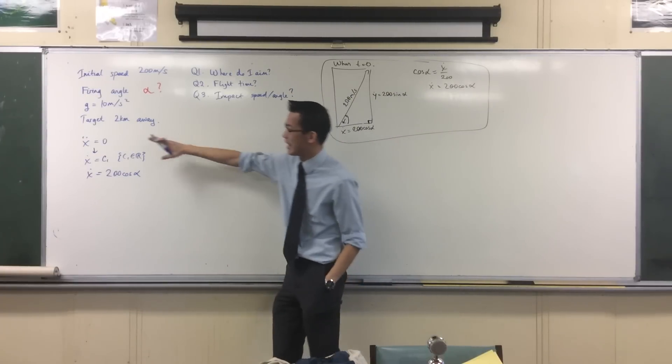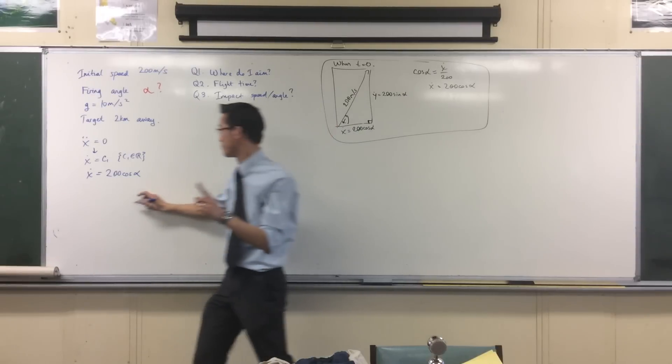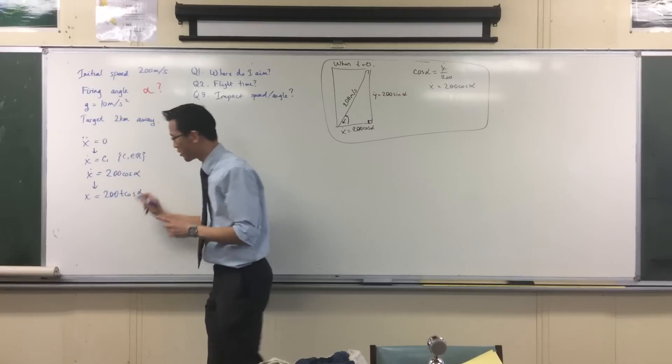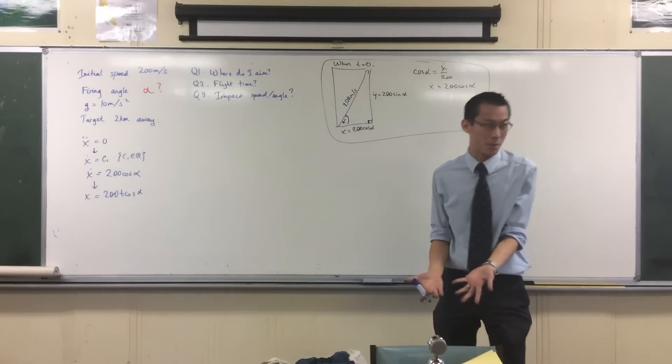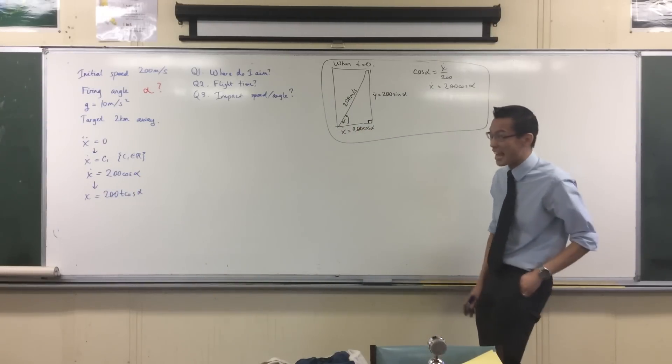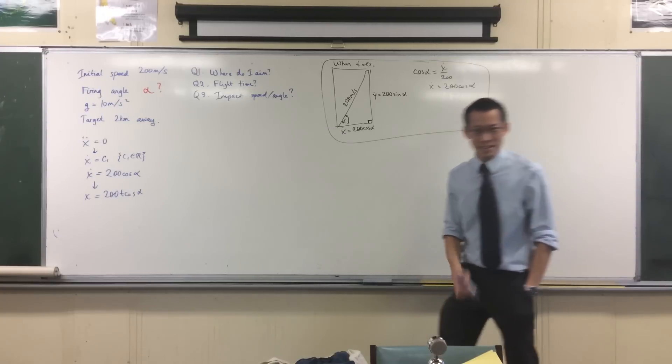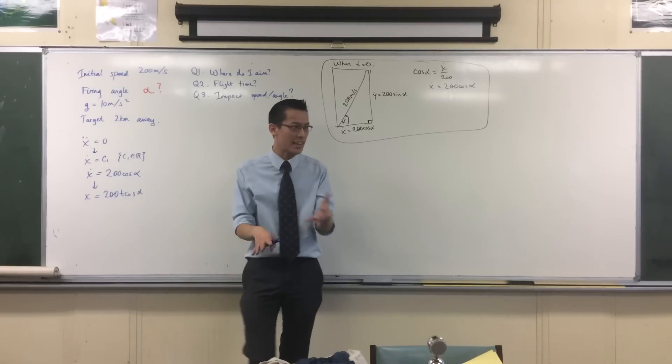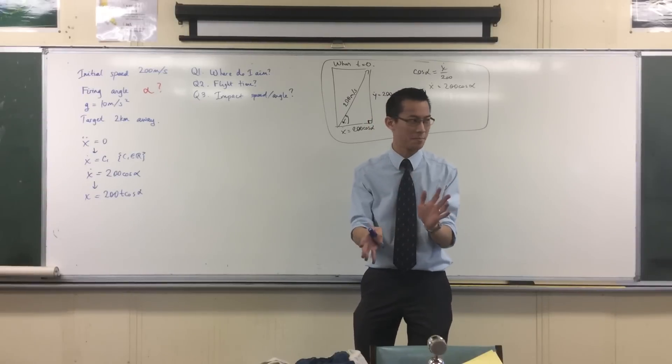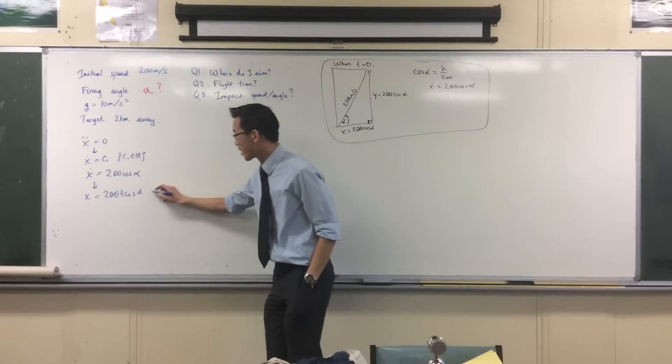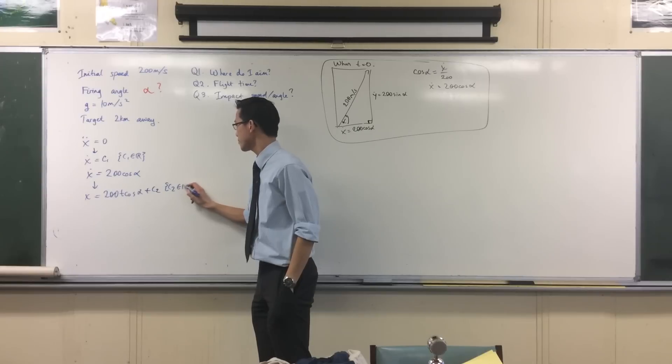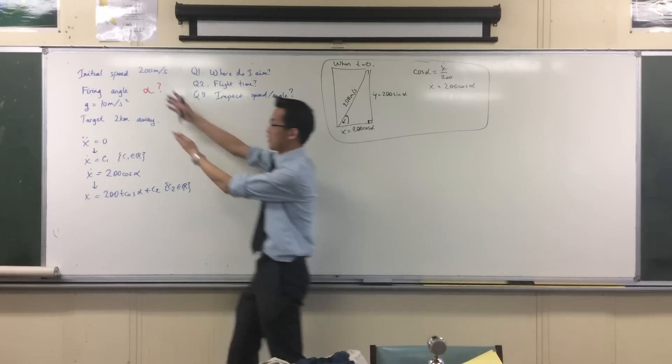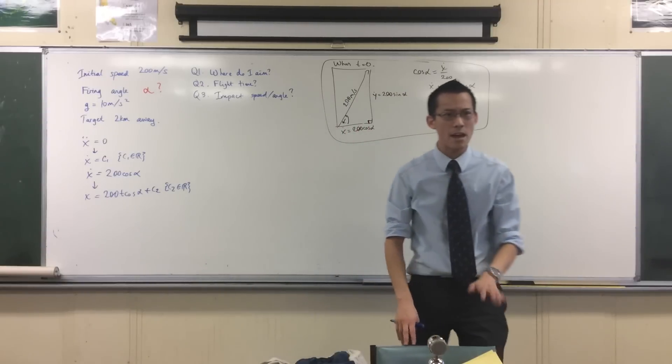Alpha is some kind of constant which I decide at the beginning, it doesn't change as I go through. There you go - acceleration, velocity, integrate again. Now just by convention they put the t there. Can anyone suggest me why that's probably a good place to put it? You don't want to confuse the variables. You don't want cos alpha t, it's not cos alpha t, the t is separate. There's another constant of course.